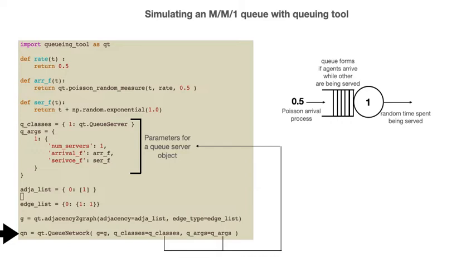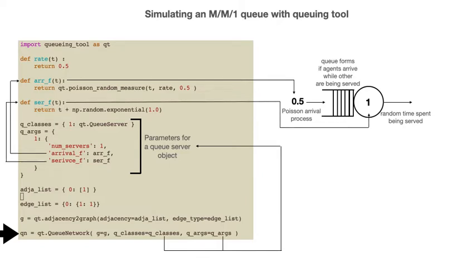You can see that we are telling queuing tool that the customer arrival times are generated by the rf function defined up here. This function generates the Poisson process used to generate arrivals for our MM1 queue. You can also see that the service times are generated by the serf function defined up here. These service times are exponential random variables as we are simulating the MM1 queue. This part of the code perhaps looks a little complicated, but it is actually rather straightforward — we are using what you learned when you wrote your programs for simulating the MM1 queue.